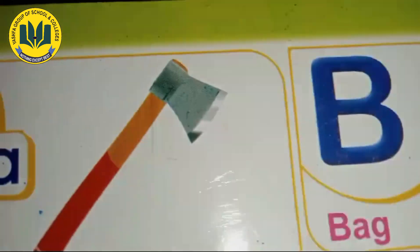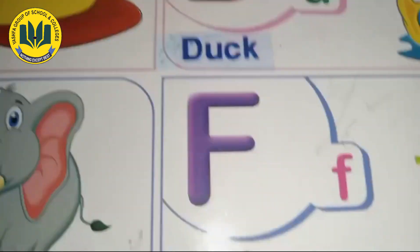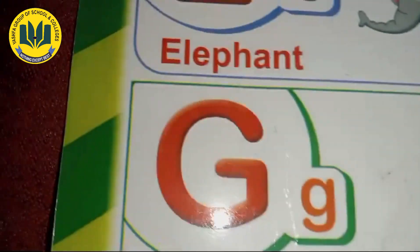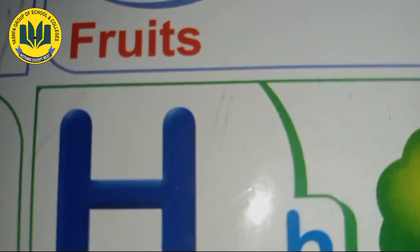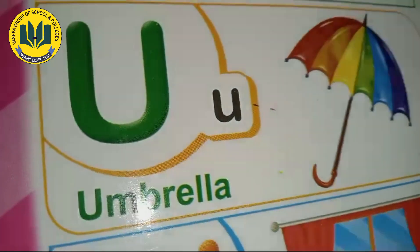Let's practice. Examples with 'A': a bag, a duck, a cap, a fruit, a jacket, a house, a girl — these use consonant sounds. Examples with 'An': an apple, an ice cream, an orange, an umbrella — these use vowel sounds.